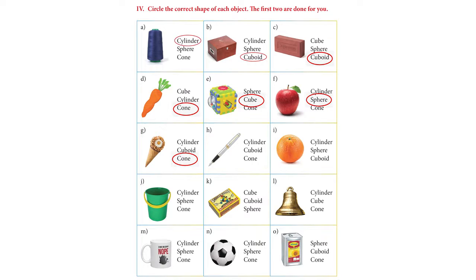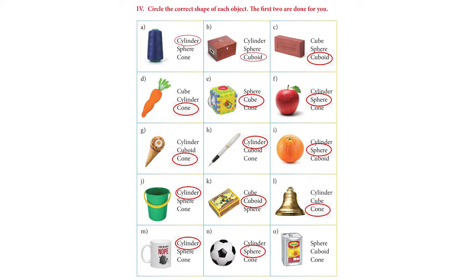The next one is a pen — that looks like a cylinder. And we have an orange here — orange is a sphere. The next one is a bucket, which looks like a cylinder. And we have another matchbox — that looks like a cuboid. We have a bell which looks like a cone. Then we have a mug which looks like a cylinder, and a football — we had learnt it before, it's a sphere. And the last one, the oil box, looks like a cuboid. Very good.